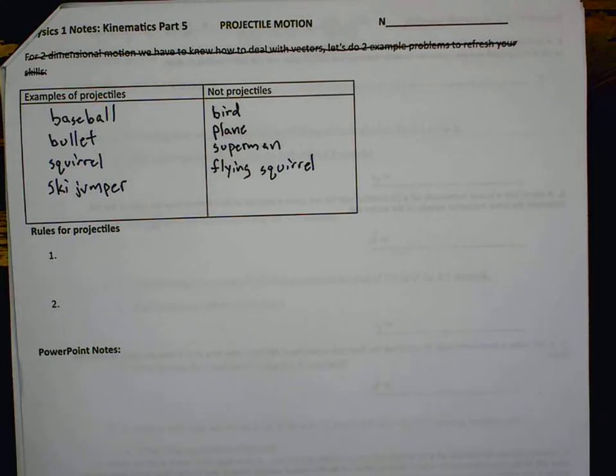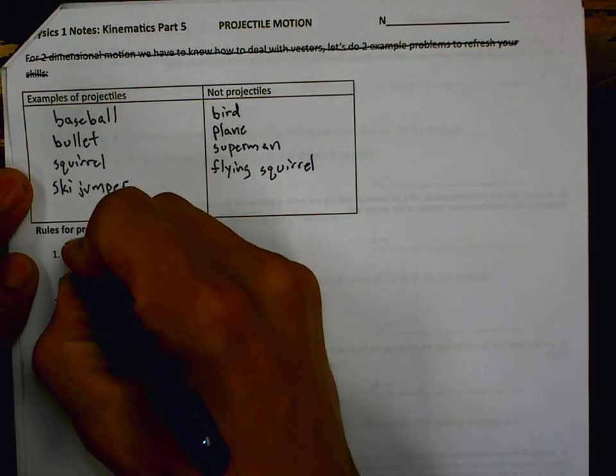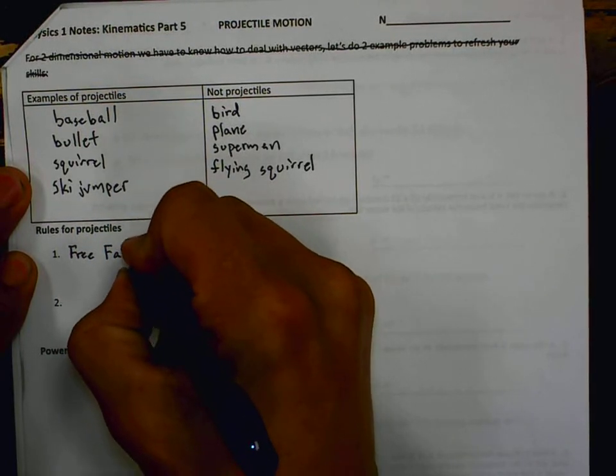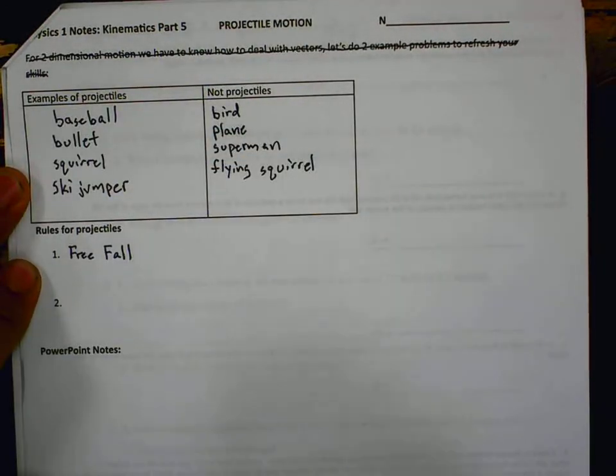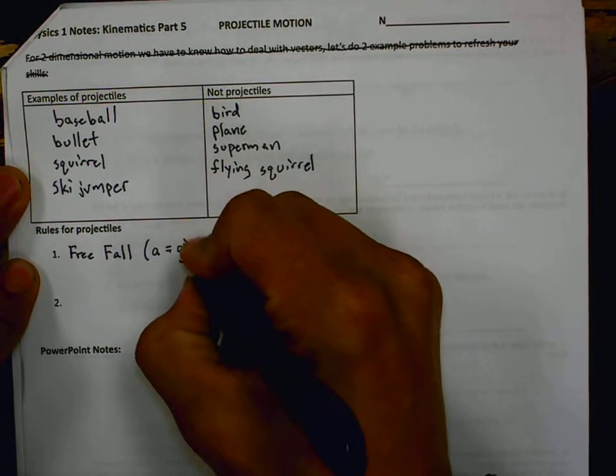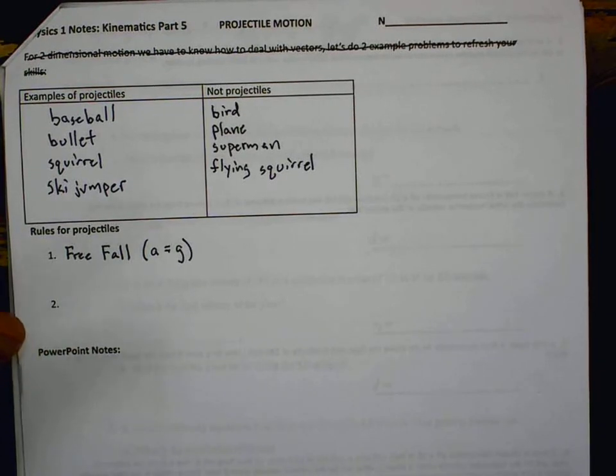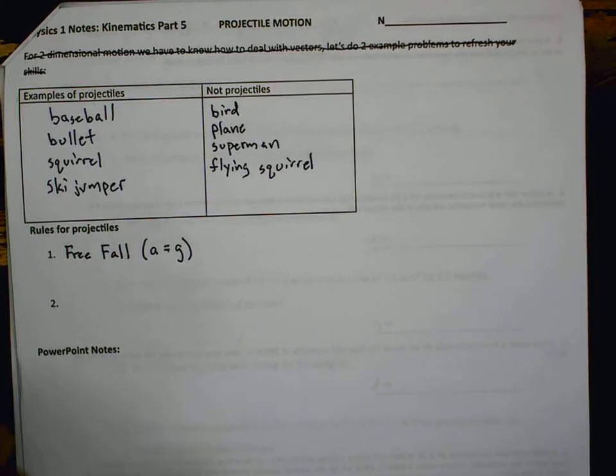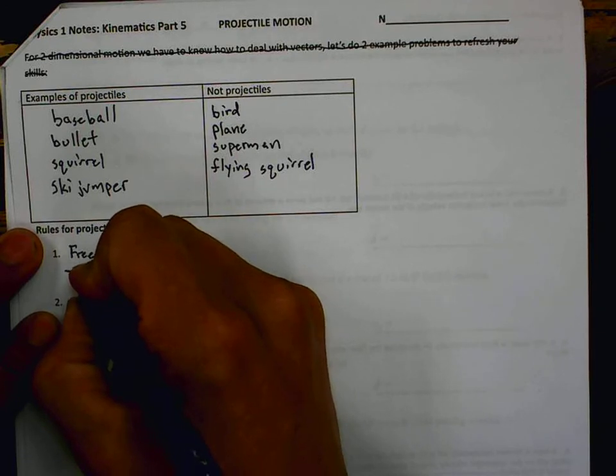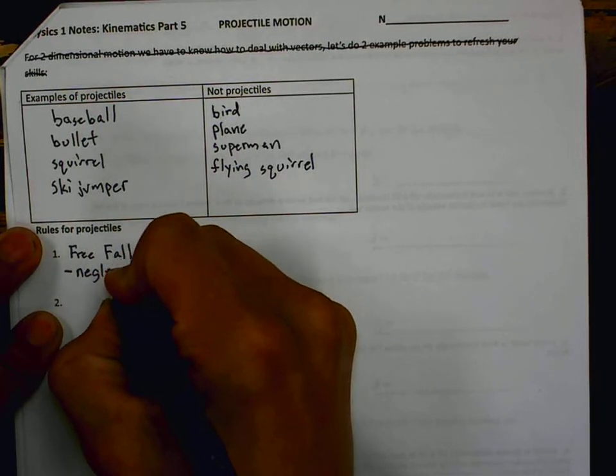The first thing is they must be in free fall. All of these things are in free fall. So that means the acceleration is equal to little g or negative 9.8 if we're talking about Earth. And they are only under the influence of gravity. Gravity is the only force on them. So that means a few things.